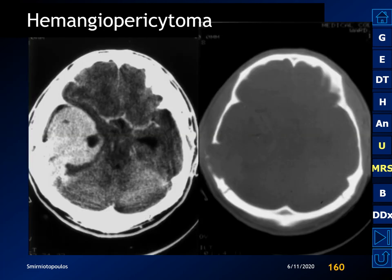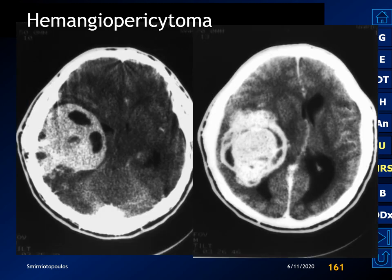Here's another example of a hemangiopericytoma on CT. It is a heterogeneous lesion associated with bone destruction and has a narrow base of attachment. Because the base of attachment is so narrow, it actually appears to be an intraaxial mass surrounded by brain.